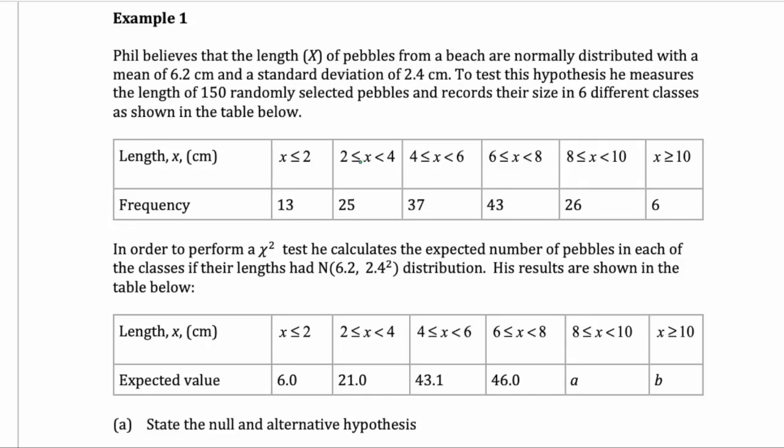Hello, this is Mr. Collier, and today we're doing a chi-square test for goodness of fit with a normal distribution. So here we have Phil believes that the lengths of pebbles have a normal distribution of 6.2 and 2.4 standard deviation. This distribution, here are the observed frequencies,